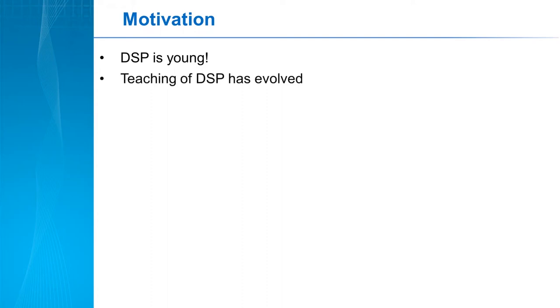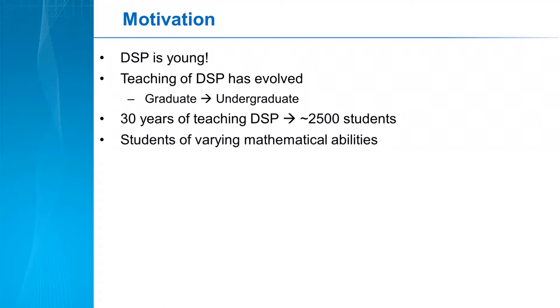But teaching of DSP has evolved from an elective course for graduates to a course that's often required for undergraduates. For example, in our program both electrical engineers and computer engineers have to take a DSP course at the junior-senior undergraduate level. I've been teaching DSP for well on 30 years now and probably have taught 2,500 students in that time and I've discovered a few things. My students have varying mathematical abilities from those who could probably appreciate one of the earlier textbooks to those who would struggle with basic mathematical material. Maybe you found this too, but it seems to me that the mathematical preparation of students actually gets worse each year. So one has to address that.